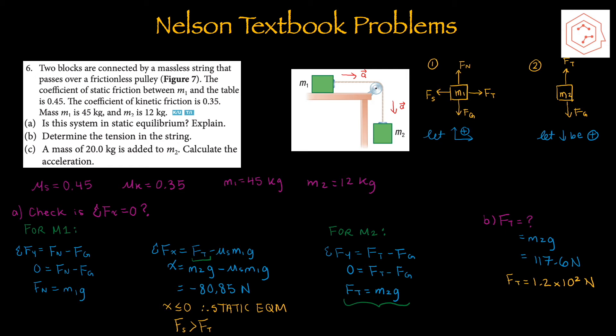If x > 0, the system wouldn't be in static equilibrium because mass 1 would be pulled forward. Since we don't know the tension force, we solve using m2. With only tension as the unknown for m2, setting Fy = 0 gives tension = m2g. Going back to mass 1, x = m2g minus mu s times m1g. Calculating using the known numbers gives x = −80.85 N, which tells us static friction is greater than the tension force. Therefore, the system is in static equilibrium.